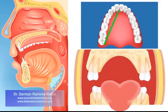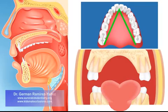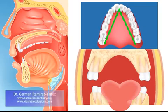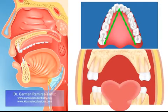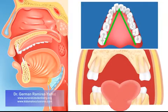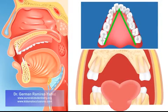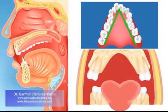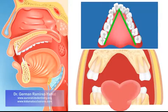The upper dental arch acquires a V-shape instead of being a rounded dental arch. Therefore, your teeth do not have space to properly align. This also produces an incorrect swallowing function.